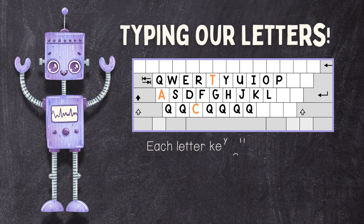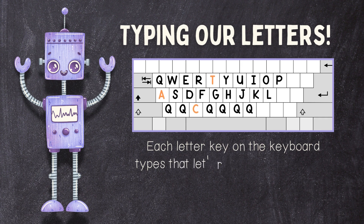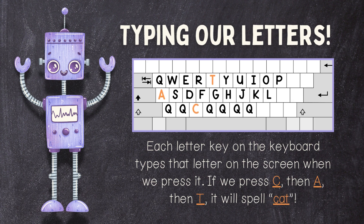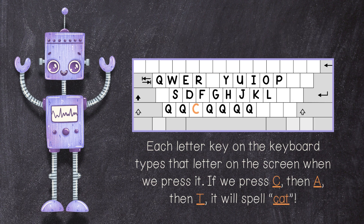Typing our letters. Each letter key on the keyboard types that letter on the screen when we press it. If we press C, then A, then T, it will spell cat.